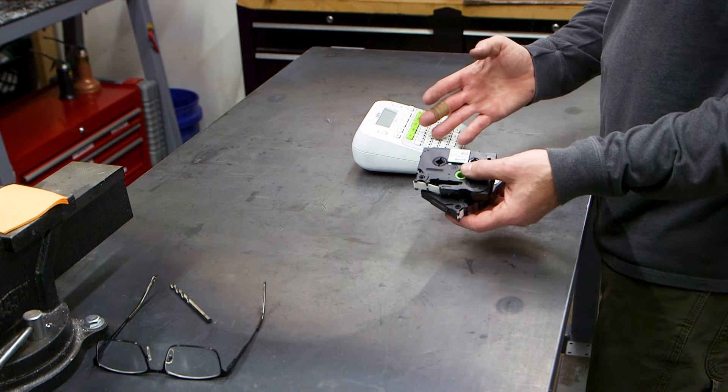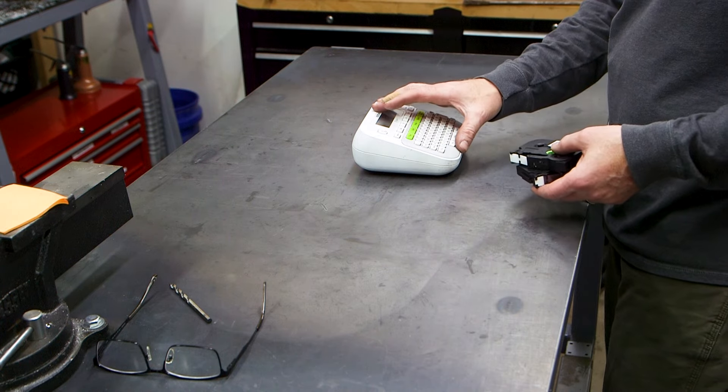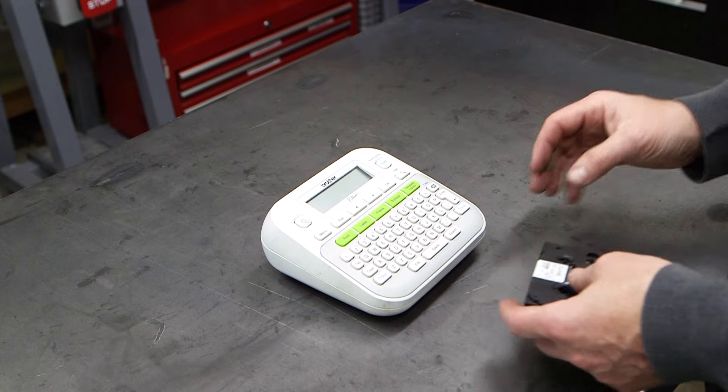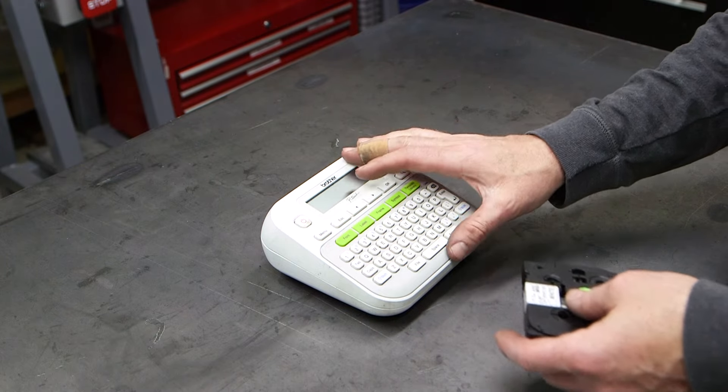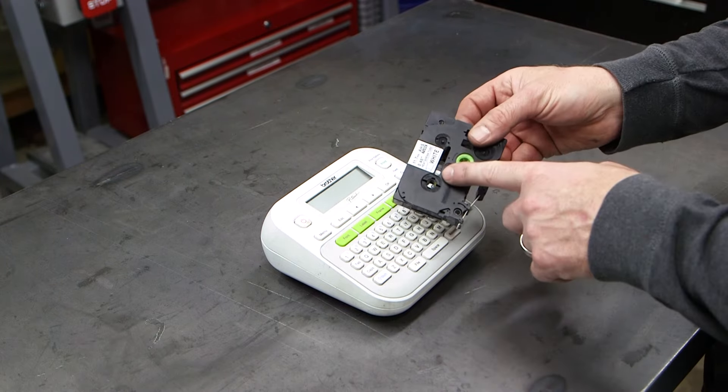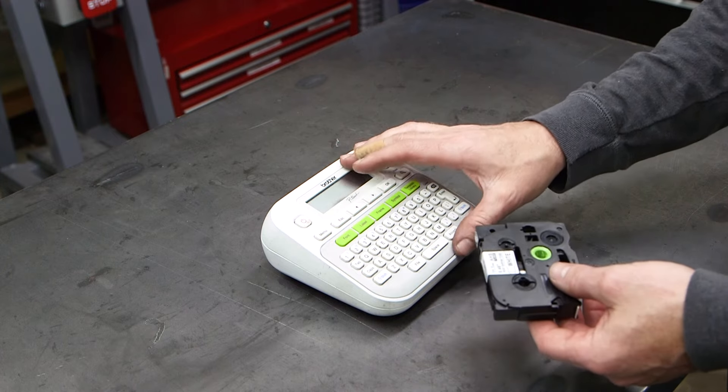I've known about heat shrink labels for a long time, but I always thought you needed a really fancy label maker. Recently while browsing Amazon looking for labels for my old P-Touch label maker, I stumbled across some heat shrink cartridges for your typical label maker.